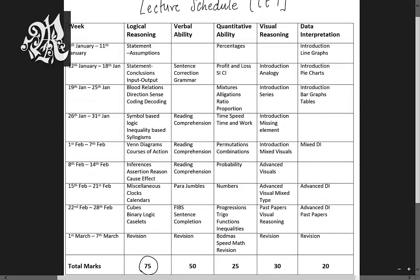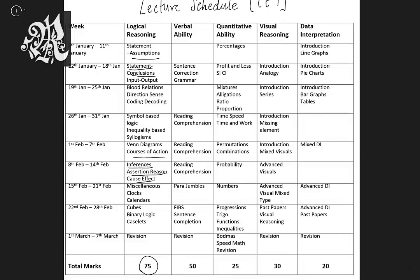Now what all do we have in this? We have the verbal side of it — for example, statement assumptions, courses of action, statement conclusions, inferences, assertion, reason, and cause-effect. Now out of these six topics, five of them would be asked in the exam, giving you 5 times 5 — 25 marks for these five topics.